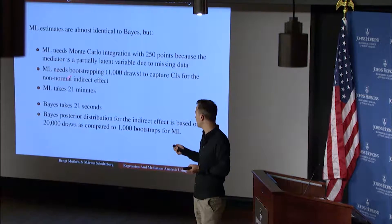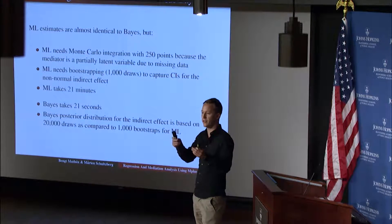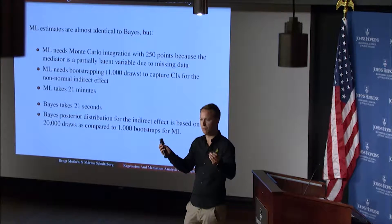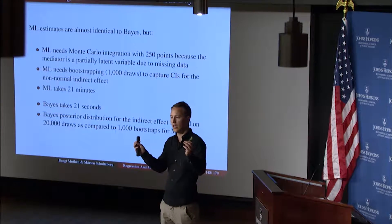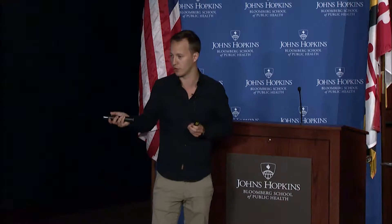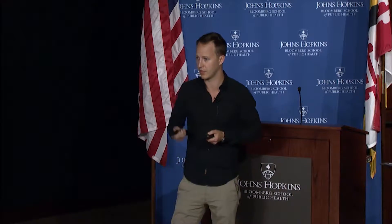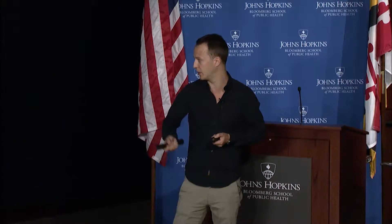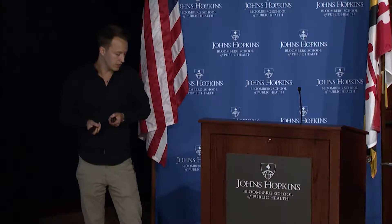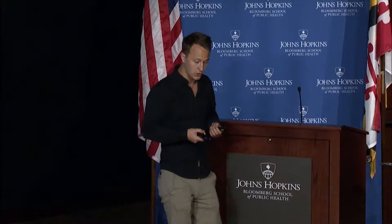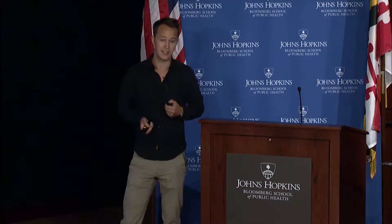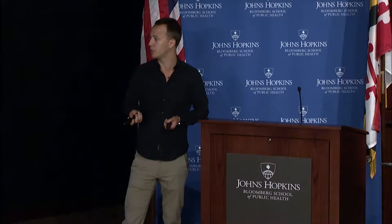Not only is the time difference large, but we base the ML skew distribution on 1,000 draws whereas the Bayesian posterior is based on 20,000 draws. So we have much better precision in the high and low percentiles of this distribution, meaning the confidence interval is probably more accurate for BAYES — assuming independent draws and low autocorrelation. That's one of the neat things about BAYES: it goes really fast, gives the skewed distribution, and the non-symmetrical confidence interval right away. The second part is that you can include previous knowledge.